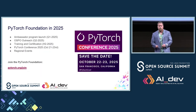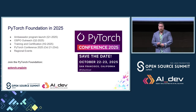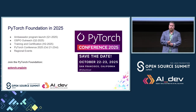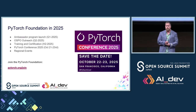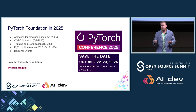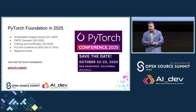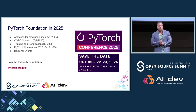I want to quickly share some things happening with the PyTorch Foundation in 2025. We are launching an ambassador program — if you're interested in being a PyTorch ambassador, please come speak to me at the conference today or tomorrow. These are the folks who will be leading regional events, advocating for PyTorch, and helping develop the deep learning and AI community in Japan. We also have a training and certification program launching in the second half of next year.